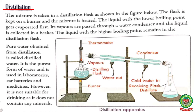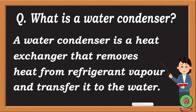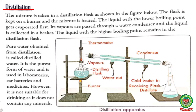The liquid having a low boiling point gets evaporated and the vapors are passed through a water condenser, and the liquid is collected in a beaker. A condenser is a heat exchanger that removes heat from the refrigerant vapor and transfers it to the water. This process is called condensation.